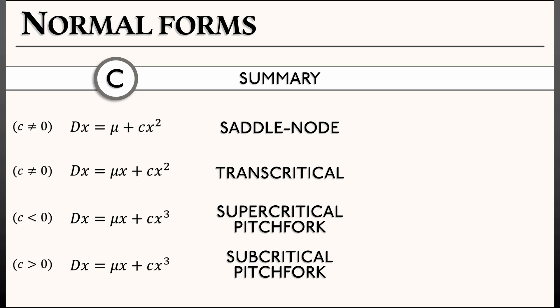Now, notice that all of these normal forms are really the lowest order terms in a Taylor expansion about mu equals zero and x equals zero. You have the leading order term that has a mu in it, and that leading order term determines everything as long as mu is not zero. But when mu is zero, then everything is determined by the next term in the Taylor expansion, which for saddle node and transcritical is quadratic in x. For pitchforks, it's cubic in x.